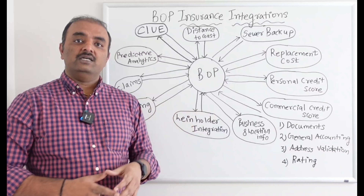Beyond these, there are additional basic integrations. Documents integration handles sending issuance documents, policy change notices, and invoices. General accounting integration ensures every financial transaction within the insurance system is recorded in a ledger for record-keeping purposes. Address validation integration corrects any addresses that underwriters may have entered incorrectly, returning the actual validated address.